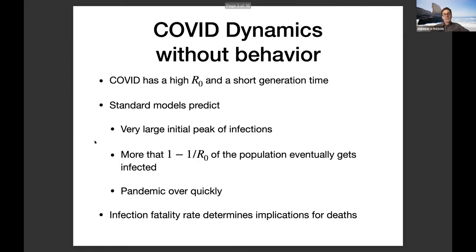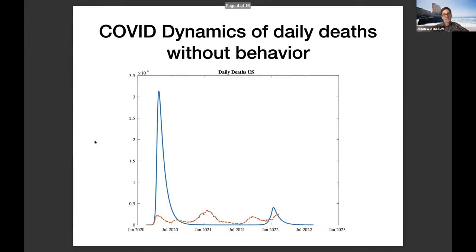For economists — this is known to all the epidemiologists — the dynamics of a simple SIR model without behavior are very much driven by the basic reproduction number and the generation time. The basic reproduction number tells you the height of the peak and the minimum fraction of the population infected in the long run. Those early predictions from March 2020 with a very high level of deaths were driven by the model without behavior. It predicted an early peak of over 30,000 deaths a day — the blue line — but the red line is what actually happened. Those early models were off by at least an order of magnitude in the level of deaths.